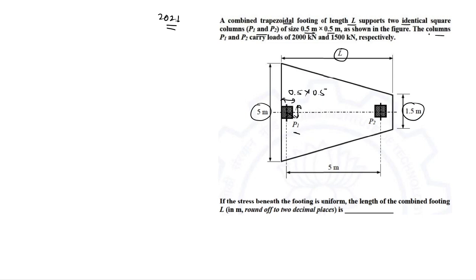The columns P1 and P2 carry loads of 2000 kilonewton and 1500 kilonewton respectively. If the stress beneath the footing is uniform, we need to find the length of the combined footing L in meters, rounded off to two decimal places.